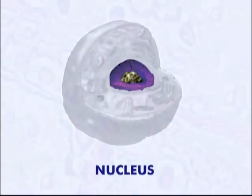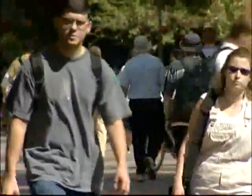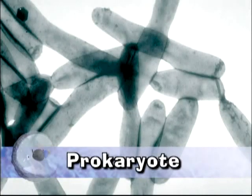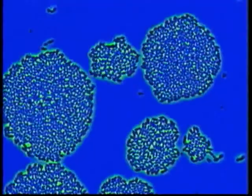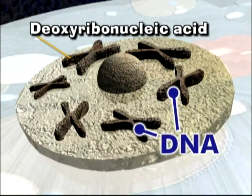A cell that has a nucleus is a eukaryote. Most multicellular organisms, like humans, are eukaryotic. Cells that don't have a nucleus are called prokaryotes — bacteria fall into this category. The nucleus is the control center for everything that happens inside a cell. It directs the organelles to make sure everything functions properly. Just like you use instructions to build something, the nucleus contains all the instructions to tell the cell what to do — in the form of deoxyribonucleic acid, or DNA.